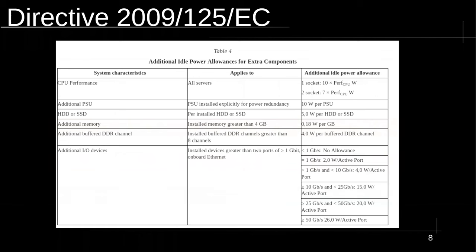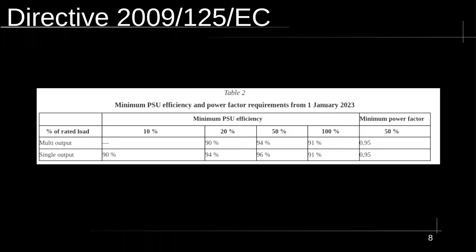The EU has actually been quite nice here. They have directive 2009/125/EC, which puts limits on how much power a server is allowed to use at idle. They came up with a complicated formula — you plug in the numbers, a number rolls out, and vendors have to stick to it. The EU's own power table is essentially an identical copy of the 80-plus Titanium rating, so any server you buy in the EU will generally have an 80-plus Titanium power supply.